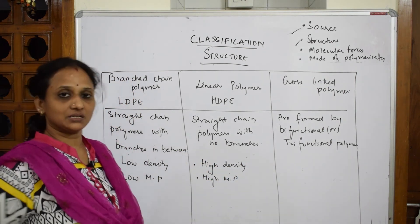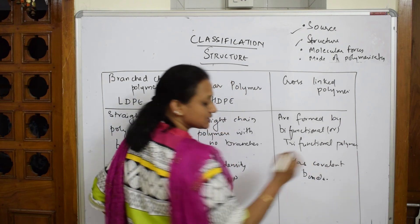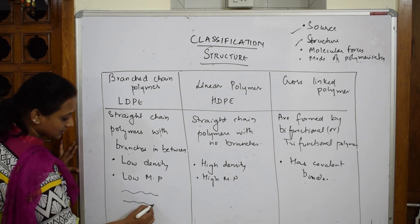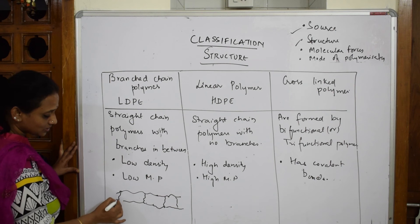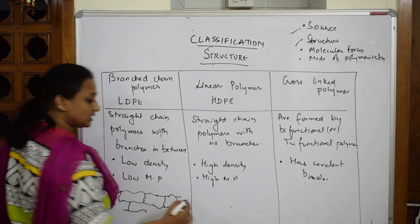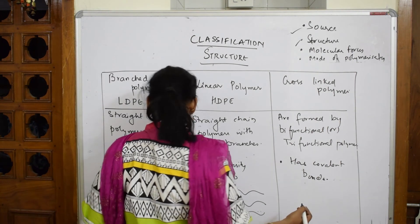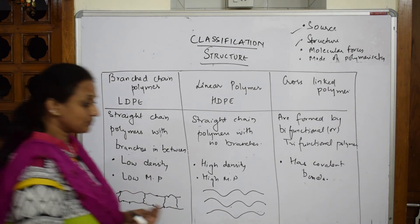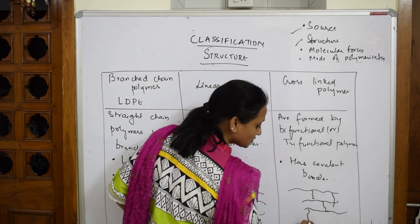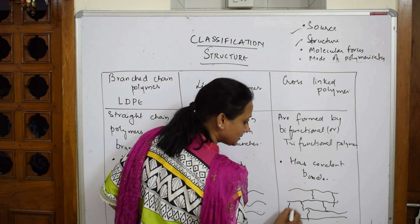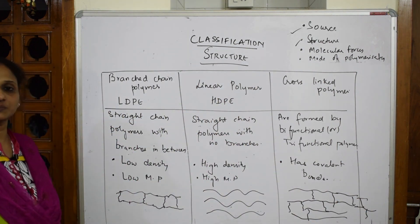Cross-linked polymers have covalent bonds between chains. When drawing: branched polymers have a main chain with branches off it; linear polymers have a straight chain with no branching; cross-linked polymers have one branch linked to another, and another branch linked again, forming cross-links throughout. These represent LDP, HDP, and cross-linked polymers respectively.